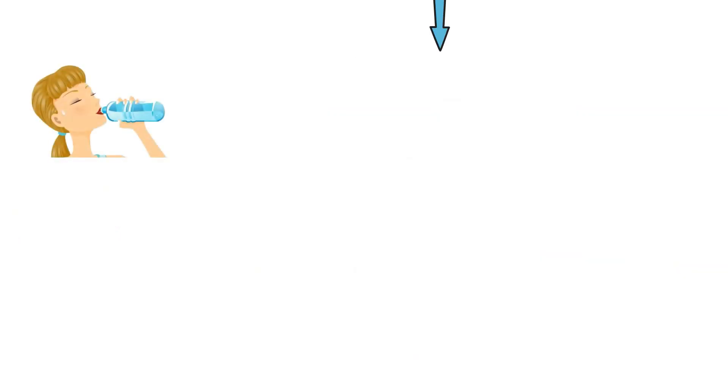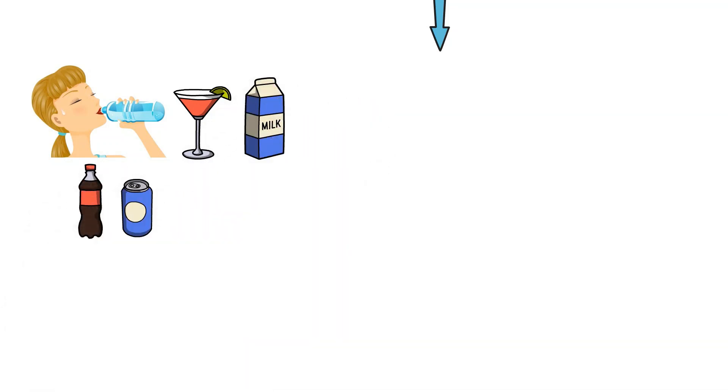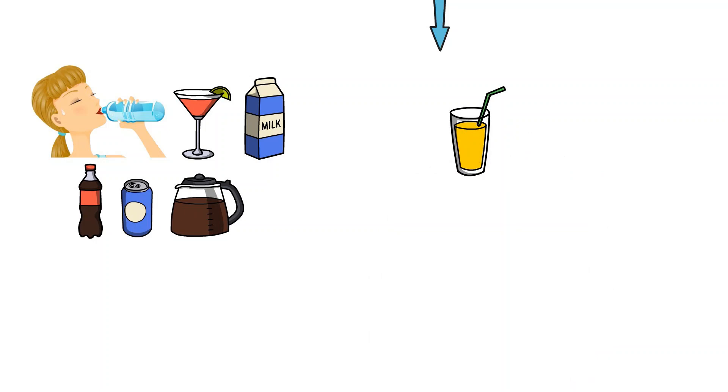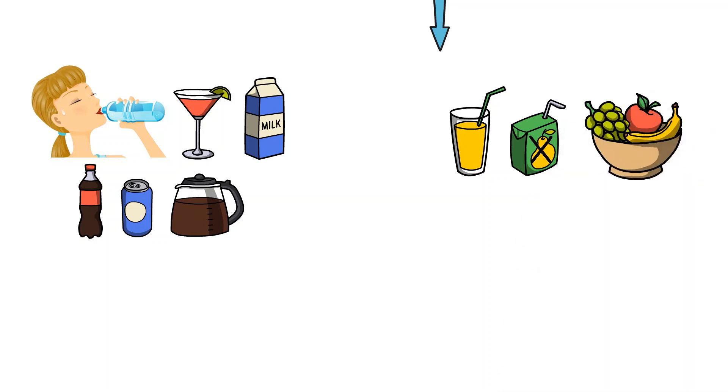To reduce the added sugars in your diet, try these tips. Drink water, other calorie-free drinks, or low-fat milk instead of sugary sodas or sports drinks. That goes for coffee drinks, too. When you drink fruit juice, make sure it's 100% fruit juice, not juice drinks that have added sugar. Better yet, eat the fruit rather than drink the juice to get the fiber as well.